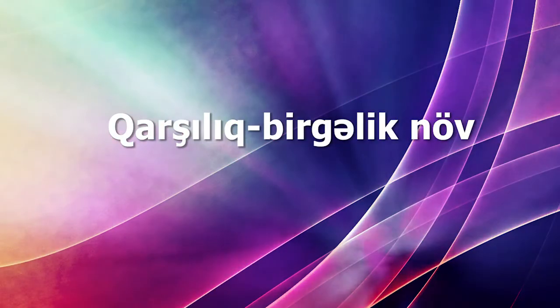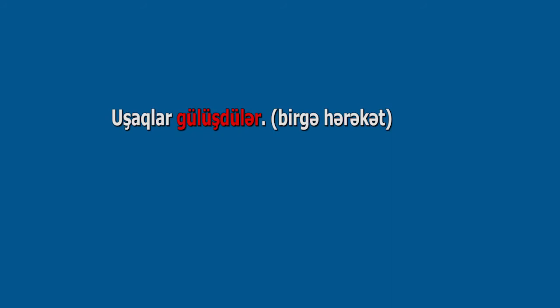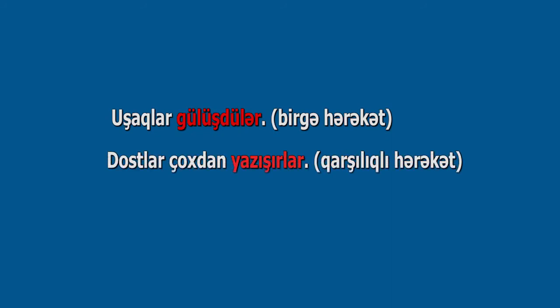Qarşılıq-birgəlik növ: Bu növdə olan feyillər -ış/-iş/-uş/-üş şəkilçilərinin köməyi ilə düzəlir. Qarşılıq-birgəlik növdə olan feyillərdə iş ya qarşılıqlı şəkildə, ya birgə formada həyata keçirilir. Nümunələr: Uşaqlar gülüşdülər (birgə hərəkət). Dostlar çoxdan yazışırlar (qarşılıqlı hərəkət). Nümunələrdən də göründüyü kimi, qarşılıq-birgəlik növdə olan feyillər təsirsiz olur.